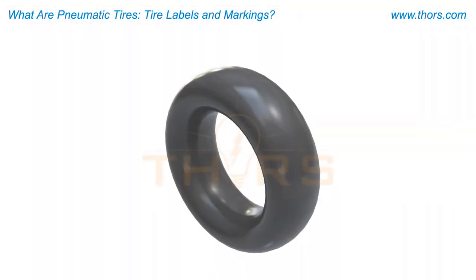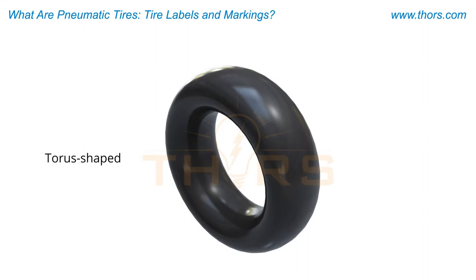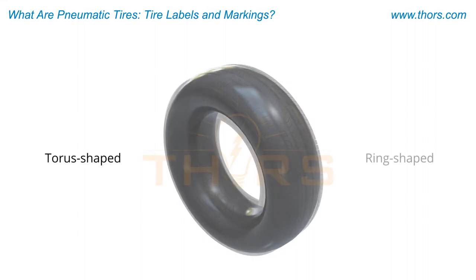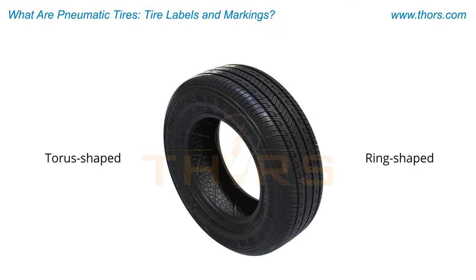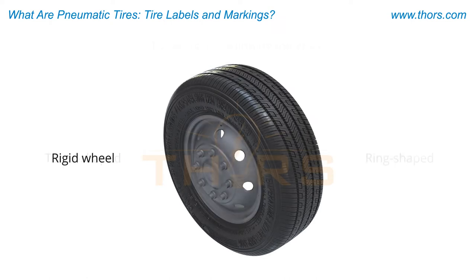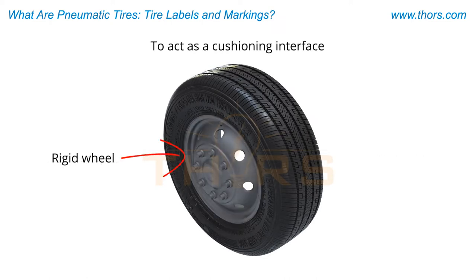At its most basic, a tire is typically a torus-shaped or ring-shaped device that is fitted onto a rigid wheel to act as a cushioning interface between the vehicle and the surface on which the vehicle travels.